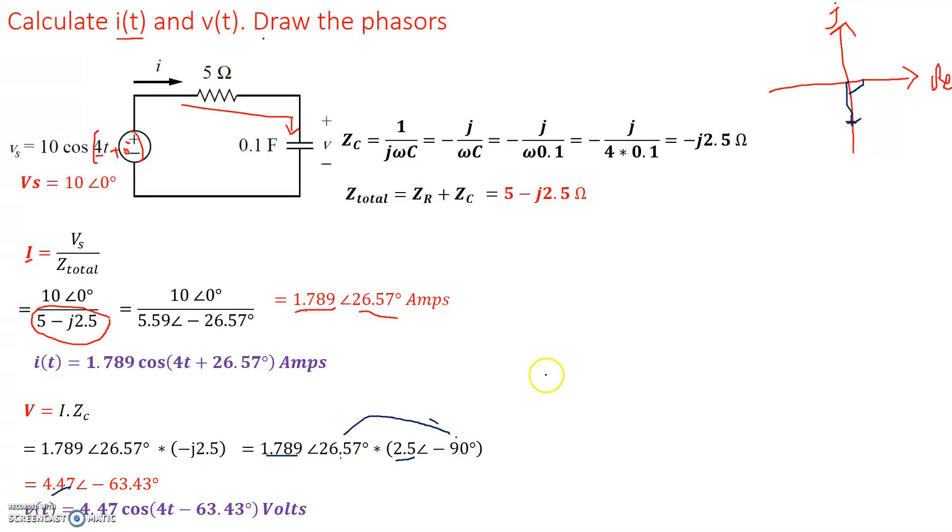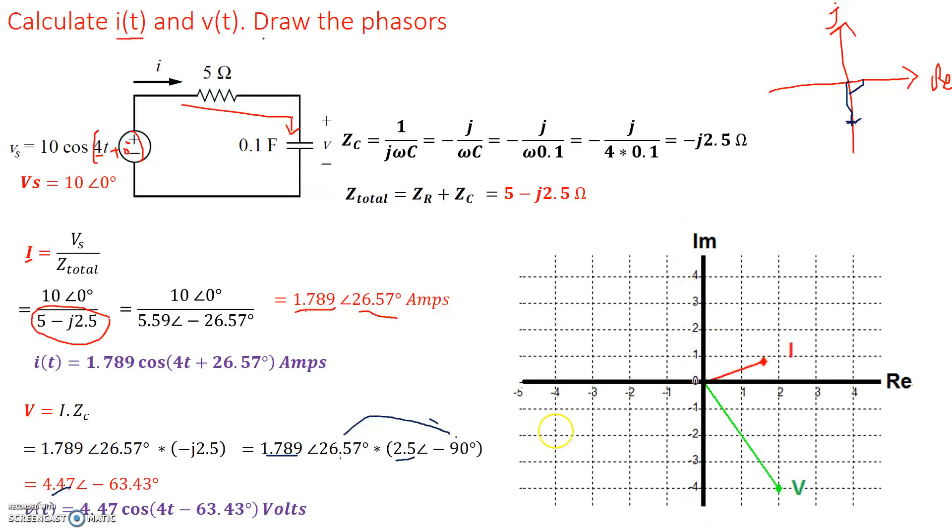Now we're also asked to draw the phasor. So let's draw the phasor. So here's our imaginary axis and the real axis. The current has an amplitude of 1.789 and is at an angle of positive 26.57 degrees. The voltage has a magnitude of 4.47. So that's the magnitude of 4.47 and has an angle of -63.43 degrees. So that's current through the capacitor and voltage across the capacitor.